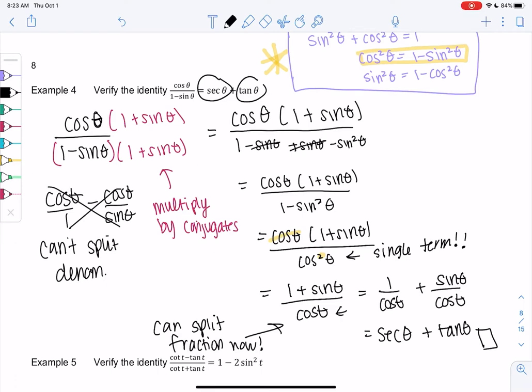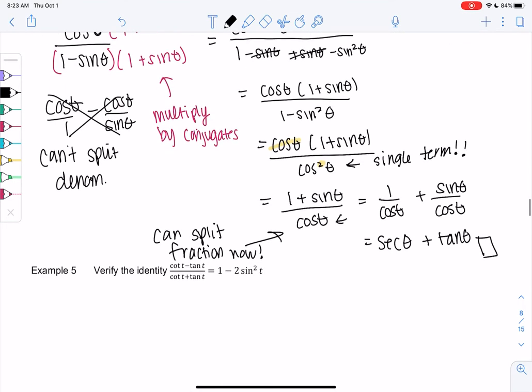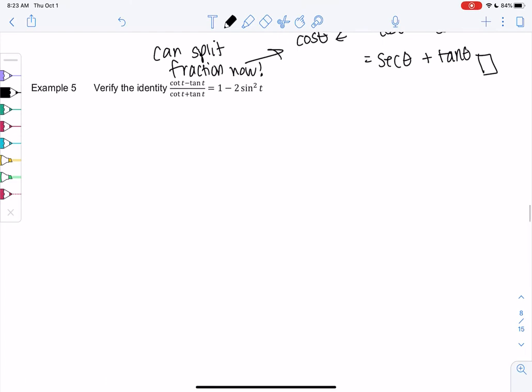All right, should we try one more? You might be starting to notice there is no one way to do this. Here's an ugly fraction, I'm going to start with the left side. I think I'm going to try everything in terms of sine and cosine, especially because the answer is in terms of sine.